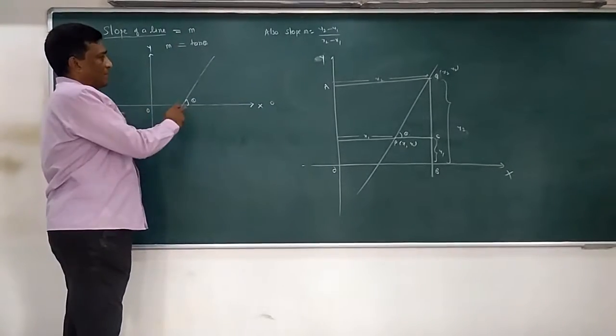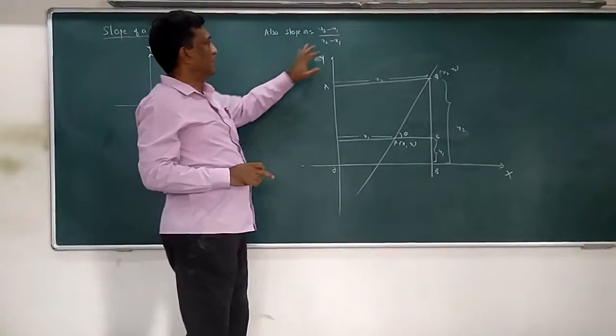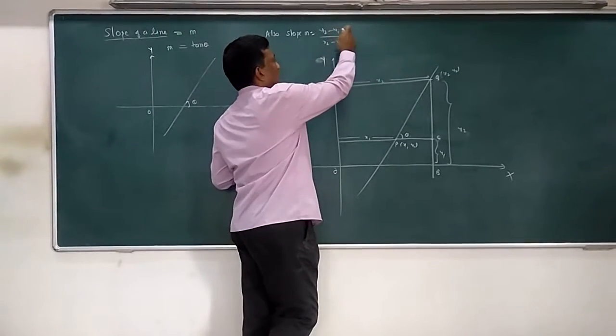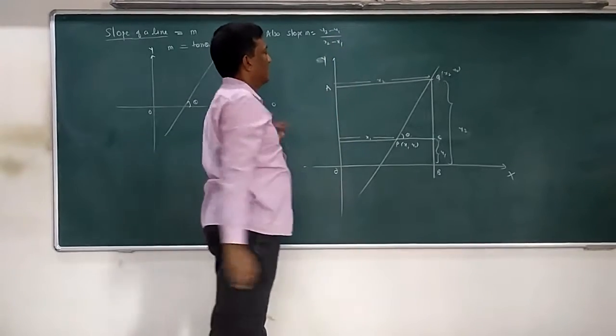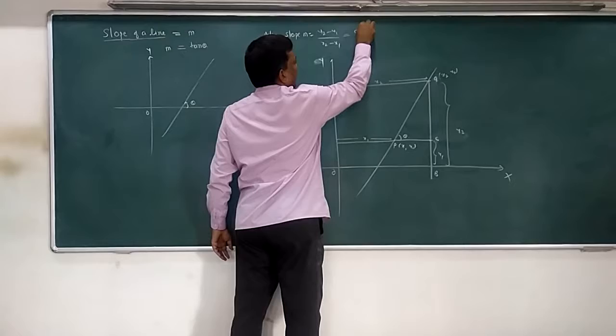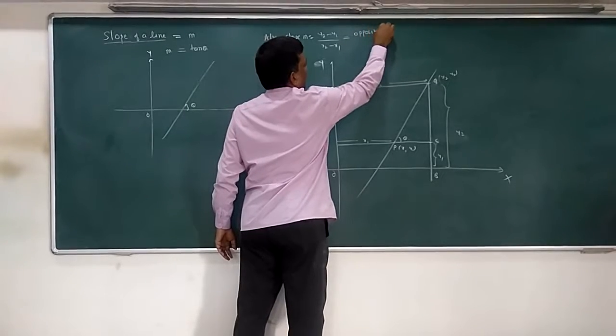Here slope is given by tan theta, here also slope is given by tan theta. But they are given in terms of coordinates like y2 minus y1 upon x2 minus x1. Basically this y2 minus y1 is nothing but opposite side,